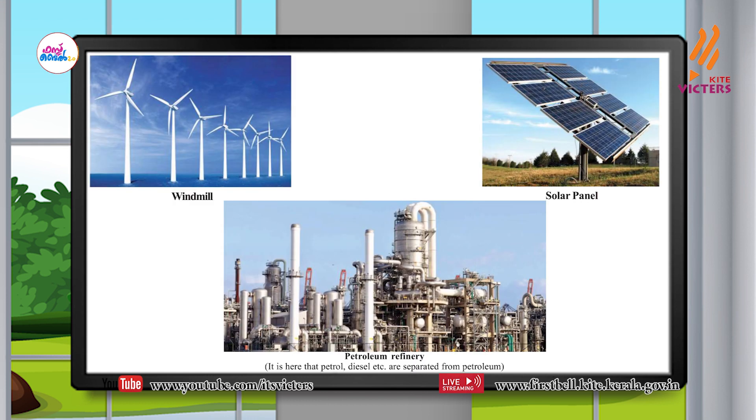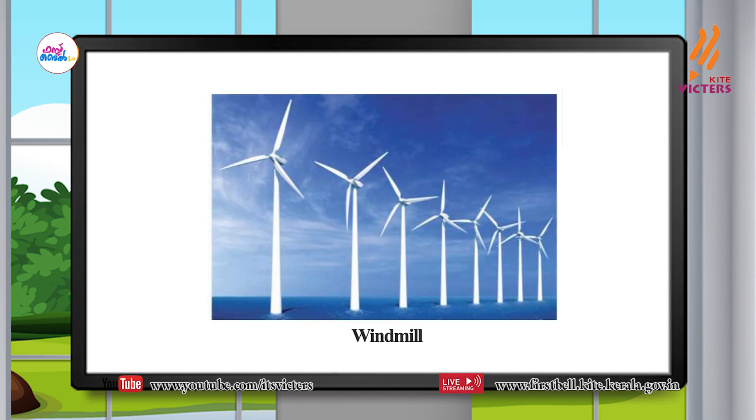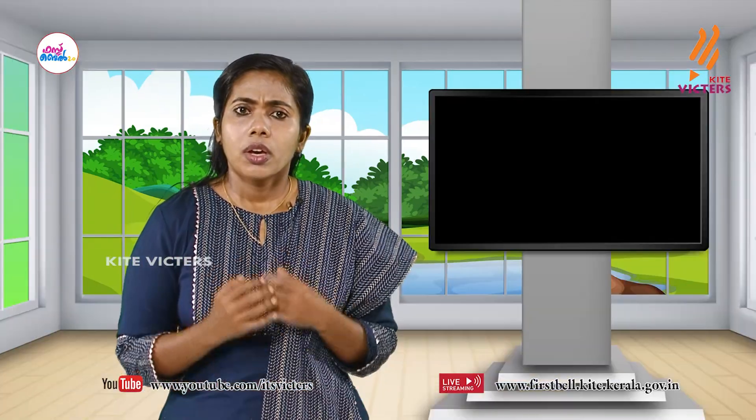Watch these images. You have seen images of energy sources: a petroleum refinery, solar panel and wind mills — these are our most important energy sources. From the petroleum refinery, components like petrol, diesel, etc. are separated. From solar panels, we use solar energy. From wind mills, wind energy is harnessed. Among these energy sources, some are exhaustible and others are inexhaustible. Solar energy and wind energy are inexhaustible, while petrol and diesel are exhaustible.